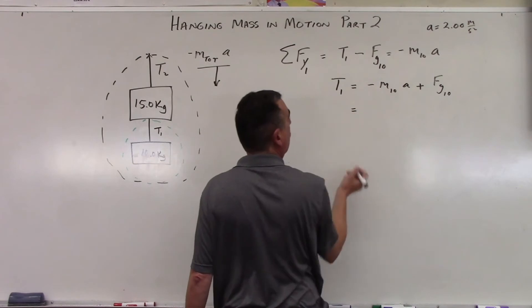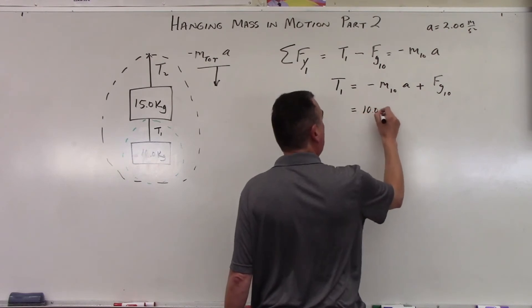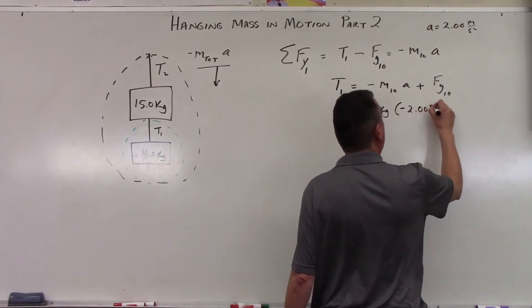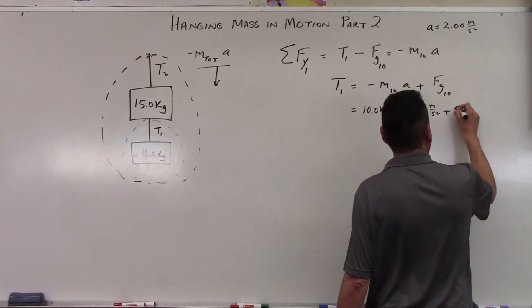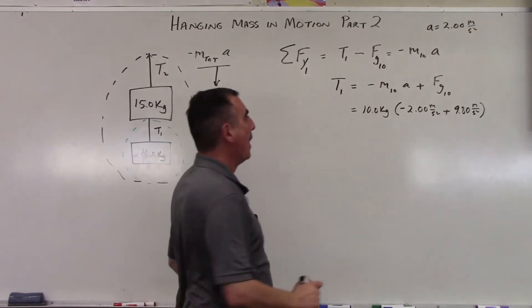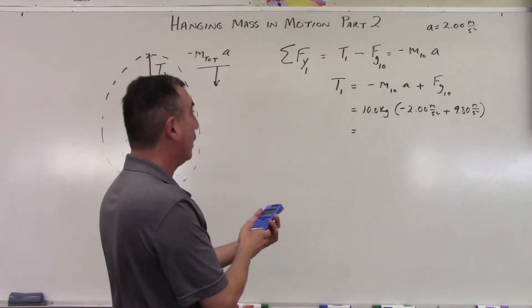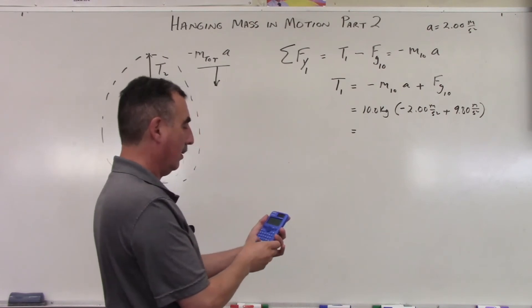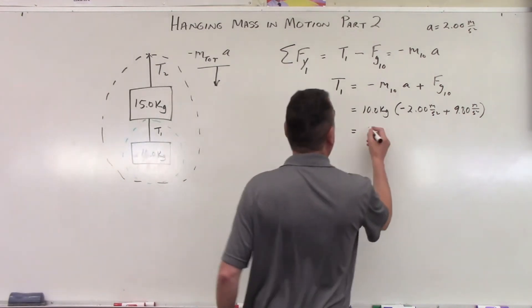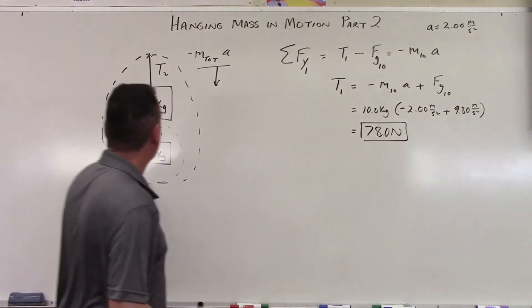So that'll be negative M sub 10 A plus F G sub 10. And since we've already seen the steps, I'm going to pull out the 10.0 kilograms. It's going to be times negative 2.0 meters per second squared plus the 9.80 meters per second squared. That's coming from this math. And let's see what value we're going to get. So 10 times 7.8. 78.0 Newtons. So that's the tension on one.